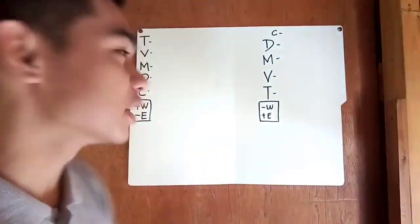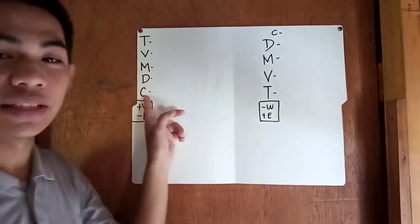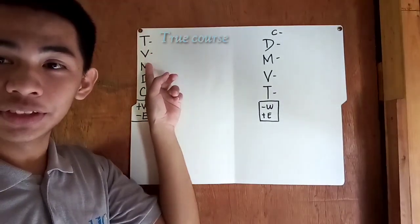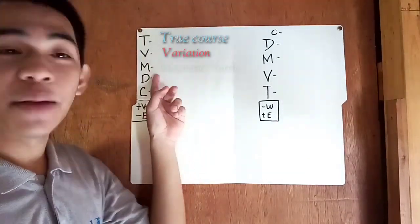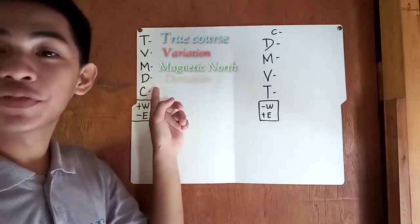In correcting and uncorrecting the compass error, we will always remember the initials T, V, M, D, C. T stands for true course, V is for variation, M is for magnetic north, D is for deviation, while C is the compass north.